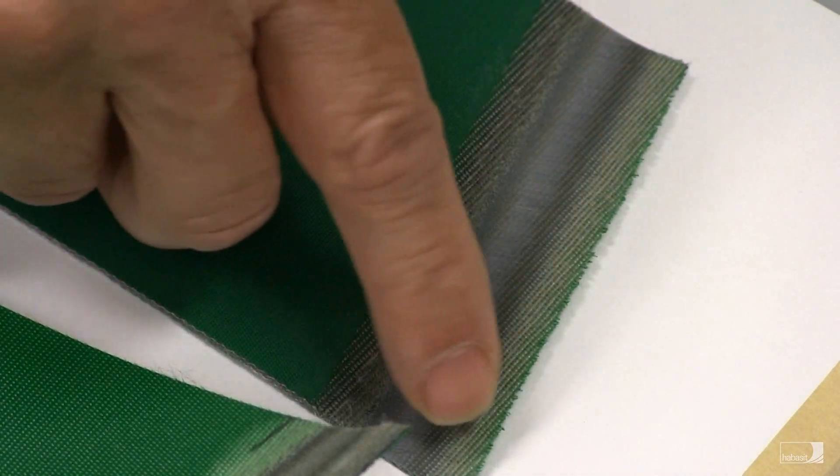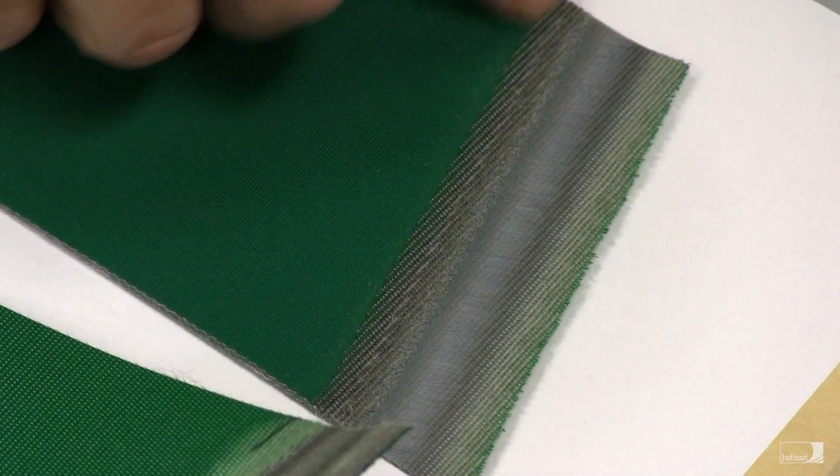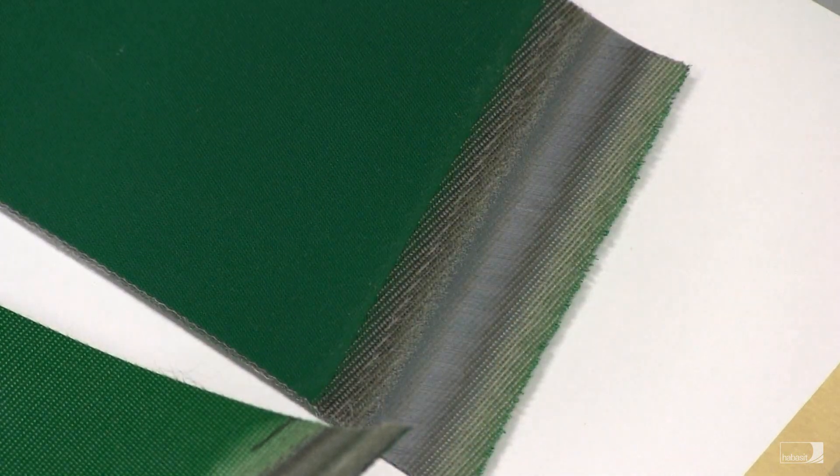So ideally the skive is feathered at the end of the edge of the belt, and all the layers are parallel to the cut edge of the belt.